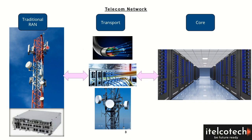If you see these rectangle antennas, these are also called GSM antennas — the antennas which are radiating and transmitting the signal from the base station and covering a certain area. Whereas these circular antennas are the microwave antennas, which are used for the transport network.